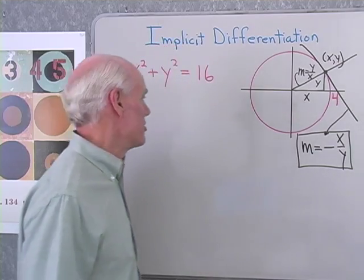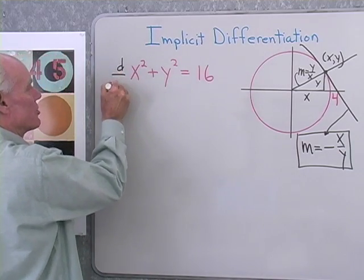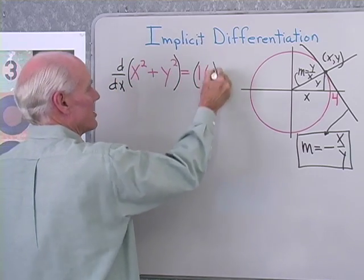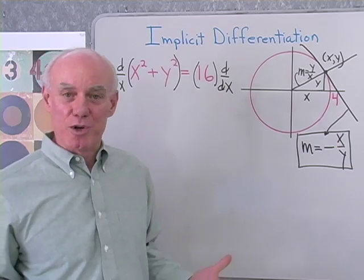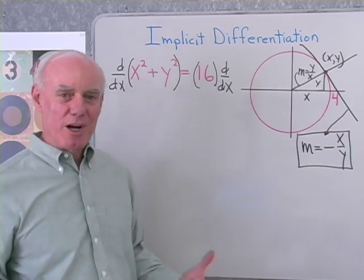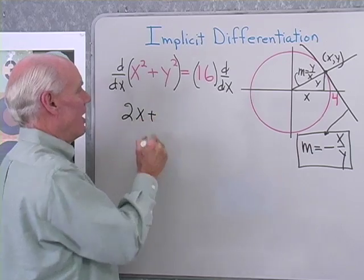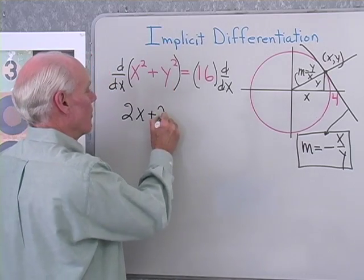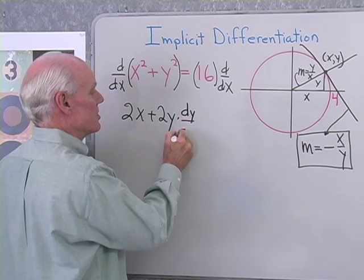Now let's do our implicit differentiation. Implicit differentiation just means that I'm going to differentiate left to right. I'll think of this derivative as an operator and just differentiate each side of this function with respect to x. When I differentiate x squared with respect to x, I get just 2x. Now when I differentiate y squared with respect to x, I have to use my chain rule. So I get 2y times the derivative of the base, which is dy dx.